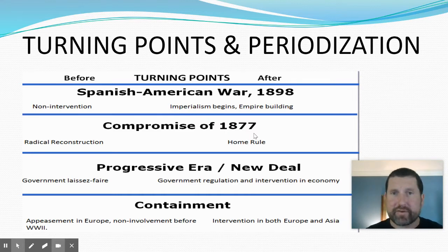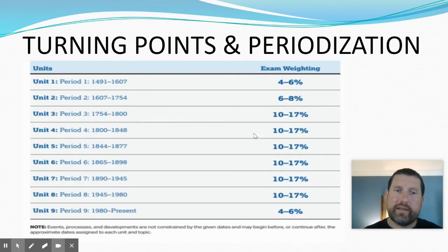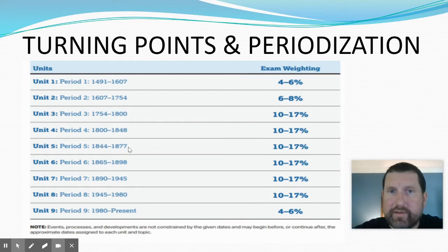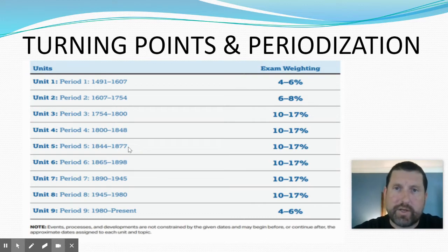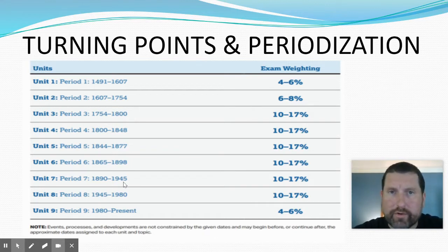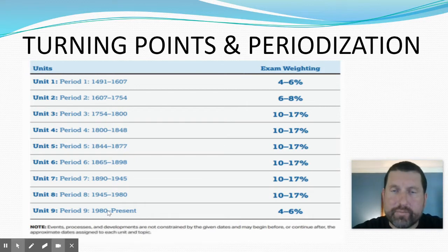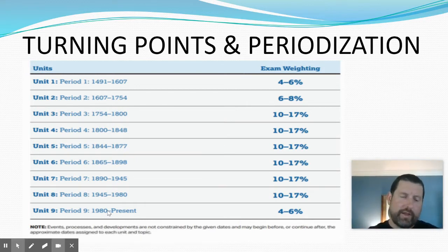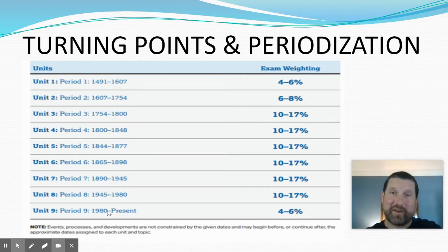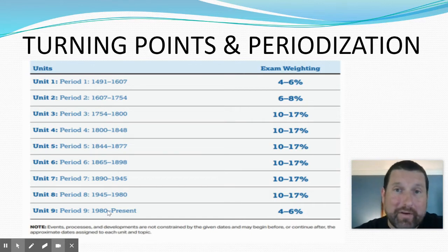You can see on the graphic on screen some other turning points in American history. 1877 — the Compromise of 1877 and essentially the end of Reconstruction in the American South and the gateway to the Jim Crow era of segregation. 1945 — the end of World War II, when a whole new world order was established. 1980 — the rise of American conservatism, Reaganism. As historians, we need to understand what historical events are so significant that they change the very face of history for an entire time period until some other turning point takes place.